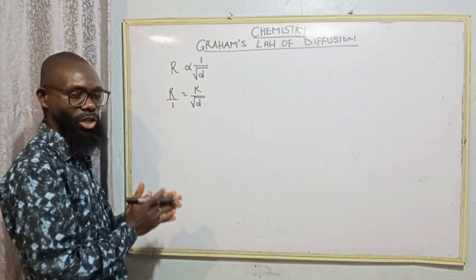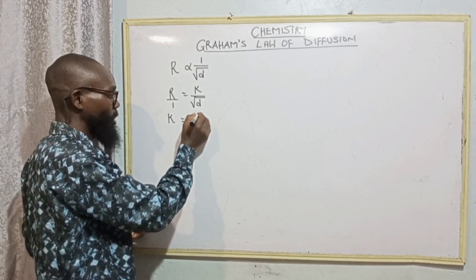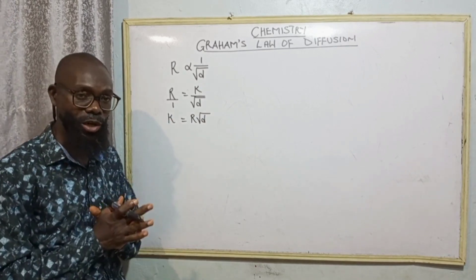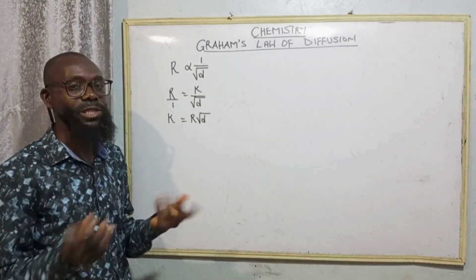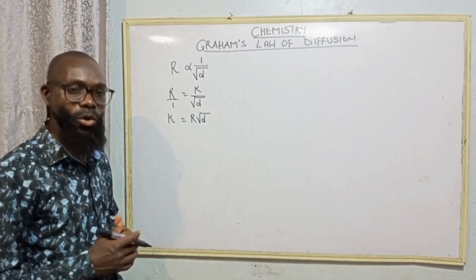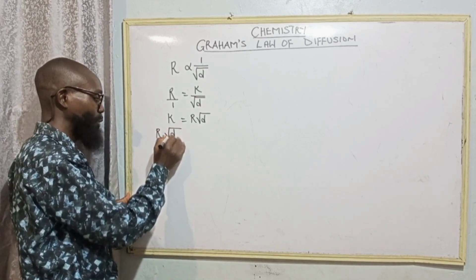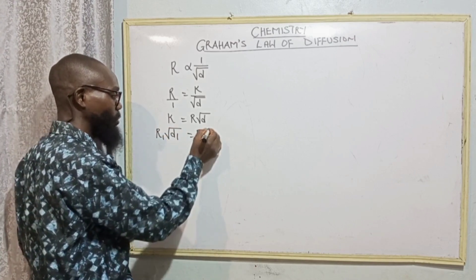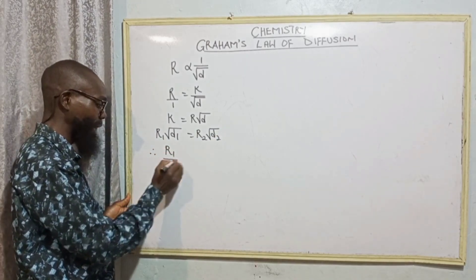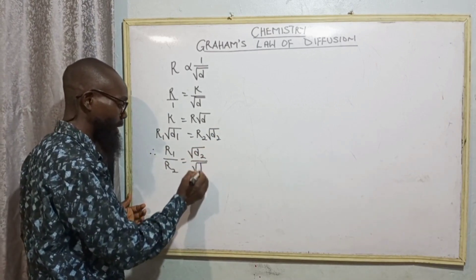Let's put this one over one and cross multiply. K equals R times square root of D. Now, we don't need this K. Let's consider we have two gases, R1 and R2. Then this expression would be: R1 times square root of D1 equals R2 times square root of D2. Therefore, you can have R1 over R2 equals square root of D2 over square root of D1.